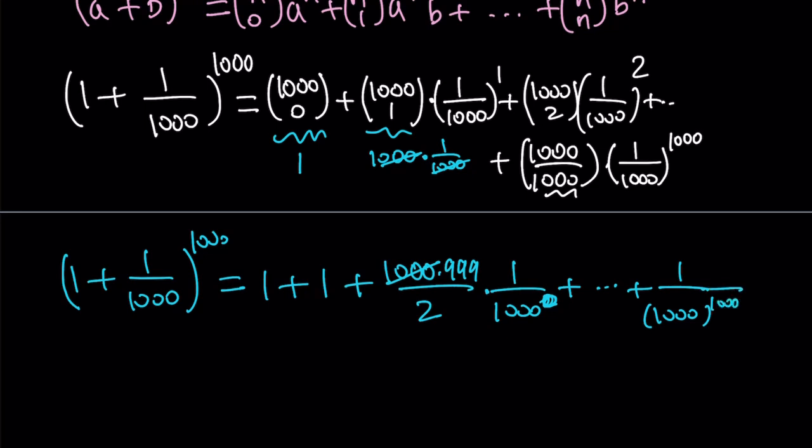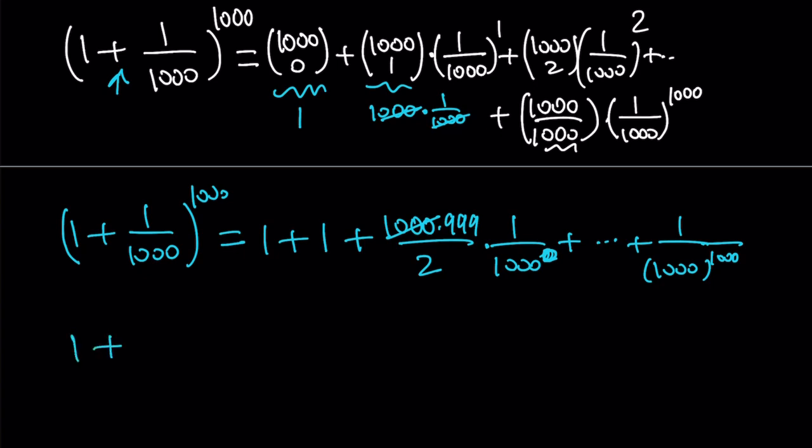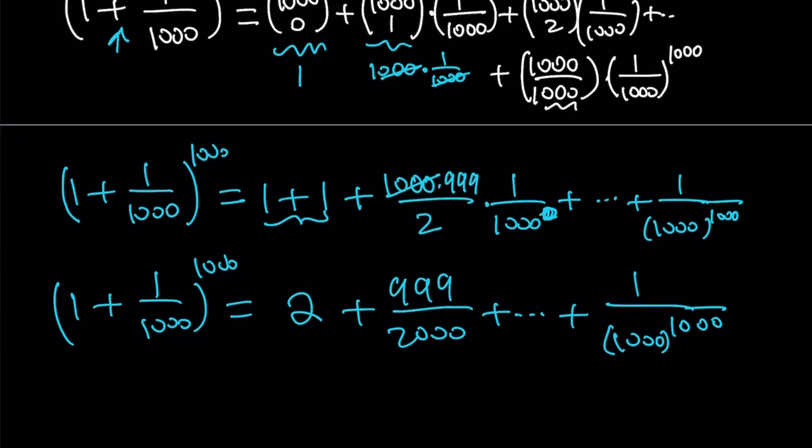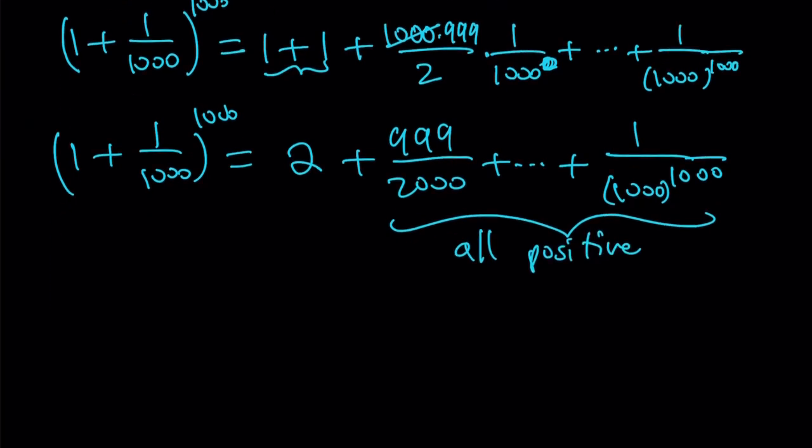But guess what? These terms are all positive. Why? Because there's a plus sign here. Everything is positive. So now from our number, 1 plus 1 over 1000 to the power 1000 is going to equal 2 plus 999 divided by 2000 dot dot dot. Lots of terms that are all positive. But notice that the numbers are going to get smaller and smaller and smaller. And this number is about one half. But the terms are going to get smaller. But since we're always adding positive terms, this sum is going to be greater than 2 because all these terms are all positive. Therefore, we can safely say that 1 plus 1 over 1000 to the power 1000 by the binomial theorem is greater than 2.